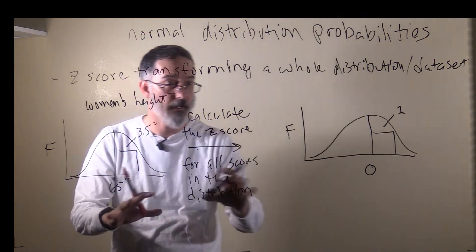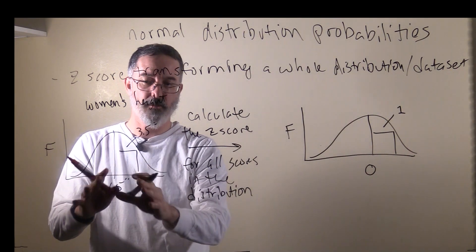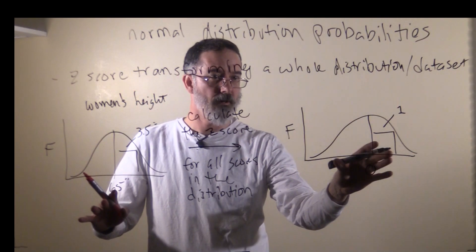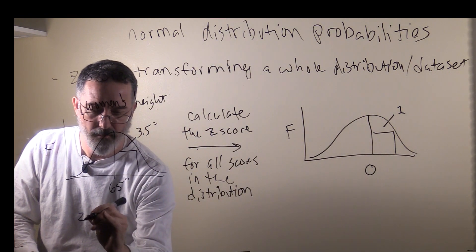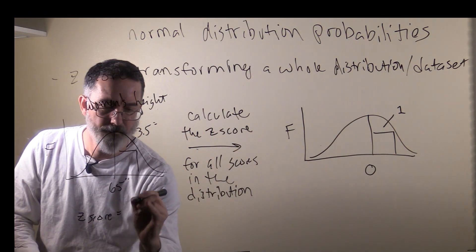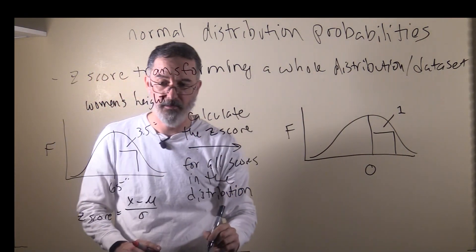To give a better sense of how this would work, we'll do z-score transformations of some of these raw scores to see where those scores fall over here. Working with population data, our z-score formula is the score minus the population mean divided by the population standard deviation.